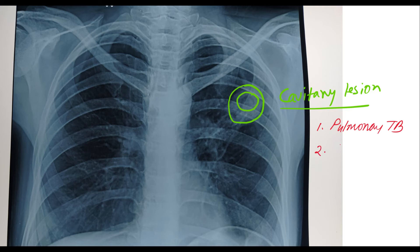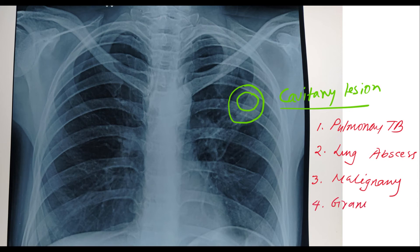Number three, malignancy. Number four, the granulomatous lesion — granuloma. The most important cause of granulomatous cavitary lesion is GPA, that is granulomatosis with polyangiitis. Previously it was known as Wegener's granulomatosis, that is WG.